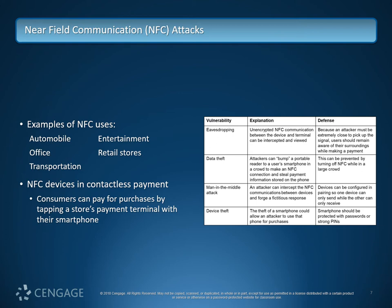If you look up skimmers for ATMs or other payment receptacles like gas station terminals, they've gotten incredibly sophisticated, but there is still some obvious visible stuff: the ribbon may be hanging slightly, misaligned, or attached with sticky tape. Data theft can be done if a reader is bumped to a smartphone to force an NFC connection if it's in discoverable mode.